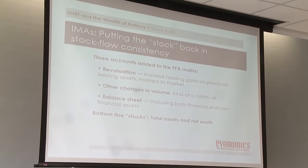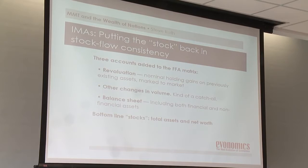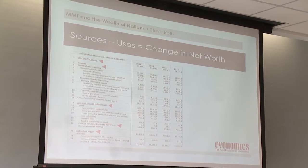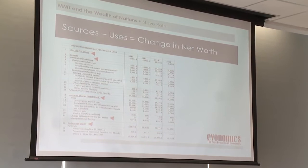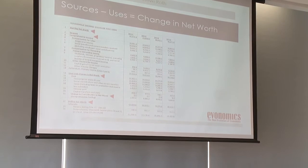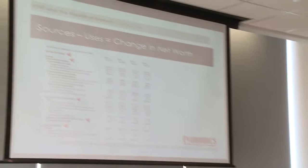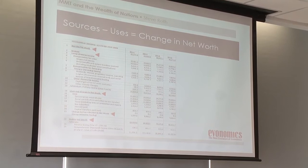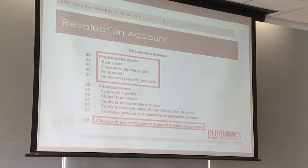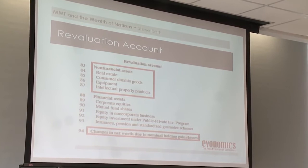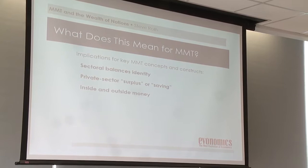This is true for all seven sectors covered. One thing this lets you do is create a real sources-and-uses statement starting with beginning net worth and ending with ending net worth — something you can only do from the S tables, the integrated macroeconomic accounts at the end of the Z.1. The revaluation account notably includes non-financial assets and changes in net worth.